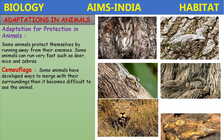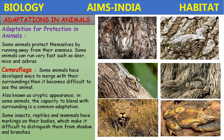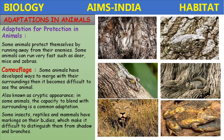Camouflage is also known as cryptic appearance. In some animals, the capacity to blend with surroundings is a common adaptation. Some insects, reptiles, and mammals have markings on their bodies which make it difficult to distinguish them from shadows and branches.